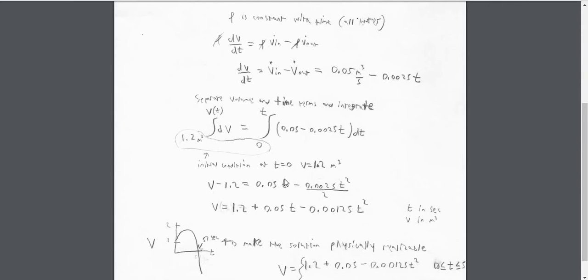Those were the initial conditions. If you do these integrations, you get the volume minus 1.2 is equal to 0.05 time minus 0.0025 times squared over 2.